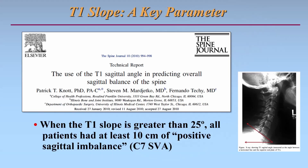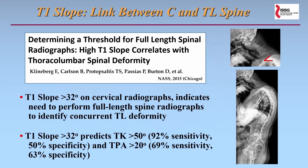Cervical alignment assessment is really evolving, and I wanted to spend the last few minutes discussing some evolving concepts. The T1 slope is emerging as a key parameter. This goes back to a study from Nott in which they showed that in patients with a T1 slope greater than 25 degrees, essentially all of them had at least 10 centimeters of positive sagittal imbalance based on the C7 SVA. In another study from Eric Kleinberg and colleagues through the ISSG, we showed that a T1 slope greater than about 30 degrees on cervical radiographs indicated the need to perform full-length spine radiographs, as it had high sensitivity and fair specificity for other spinal malalignment below the cervical spine.